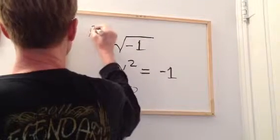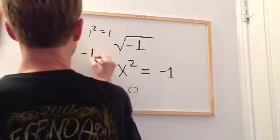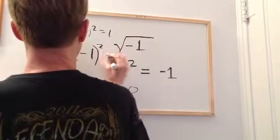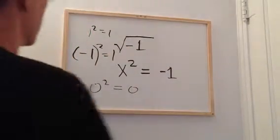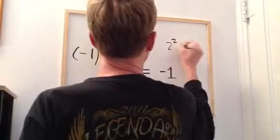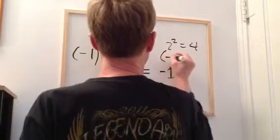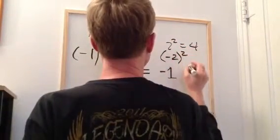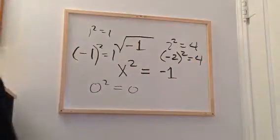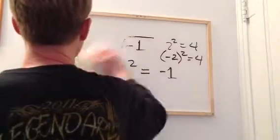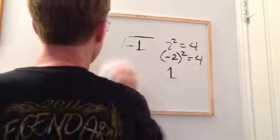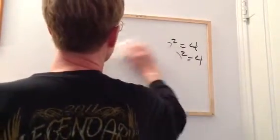If you try, one squared equals one, but minus one squared also equals one. Two squared equals four, but minus two, the quantity squared, also equals four. You can't square any known number and get minus one, or for that matter, any negative number.